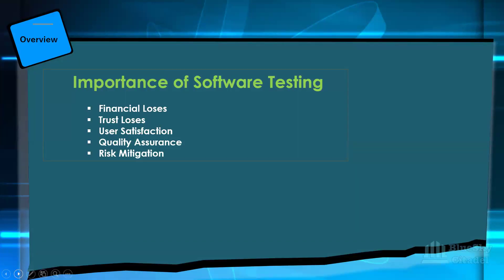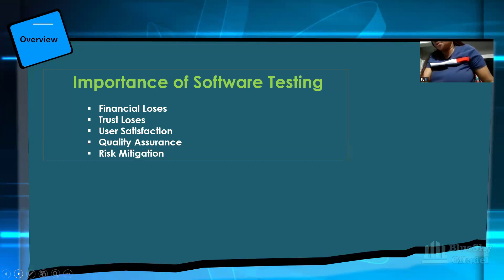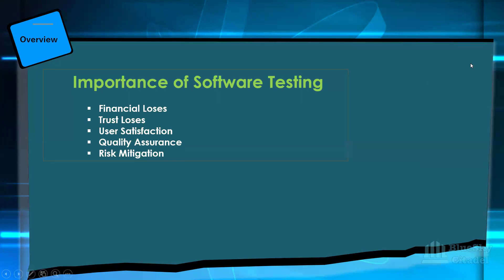The importance of software testing: as software testers, it's essential for us to carry out testing because of financial losses, trust losses, user satisfaction, quality assurance, and risk mitigation. There could be errors or bugs in software, so it's essential to identify them early — otherwise you end up spending more. At Blue Sky we observe shift-left testing, an agile principle where we carry out testing at each phase to save costs.